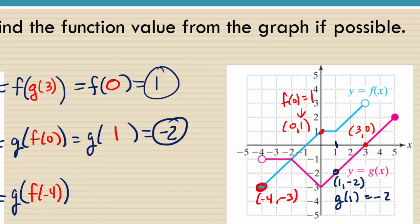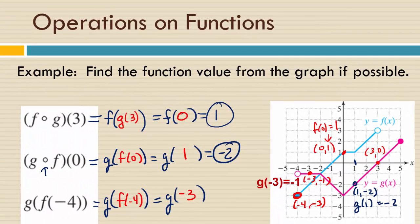So we have g, the outer function of what's being plugged in, is actually that negative 3. So this becomes the x coordinate of the function g. So if we go to the function g and we look for negative 3, what is the corresponding y value? Negative 1. Good. So that's the same as saying that g of negative 3 is negative 1.